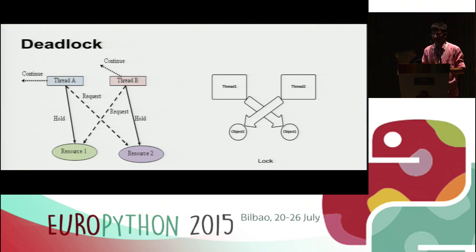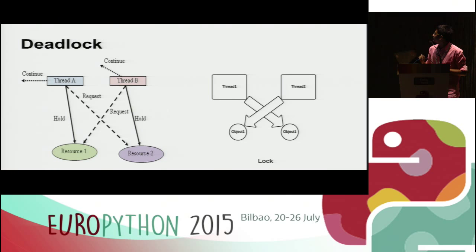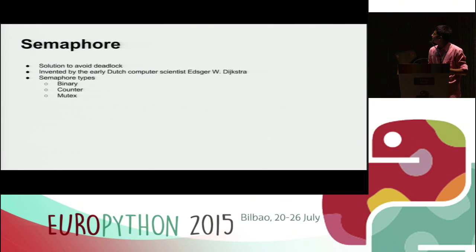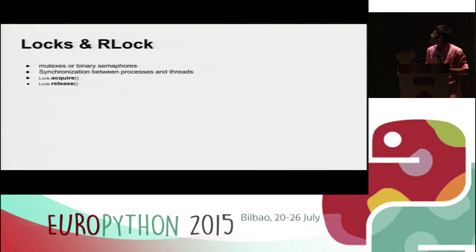This is basically a deadlock kind of situation where you have a resource shared between more than one thread or process. Resources can be anything — network resources, files, or any kind of resource. Thread A wants resource one, thread B also wants resource one, and they both get allocated their resources. To handle this, there are semaphores, invented by a Dutch computer scientist. Semaphores can be of three types: binary semaphore, counter semaphore, and mutex semaphore. In Python, binary and mutex semaphores are the same, and a counting semaphore is also provided.